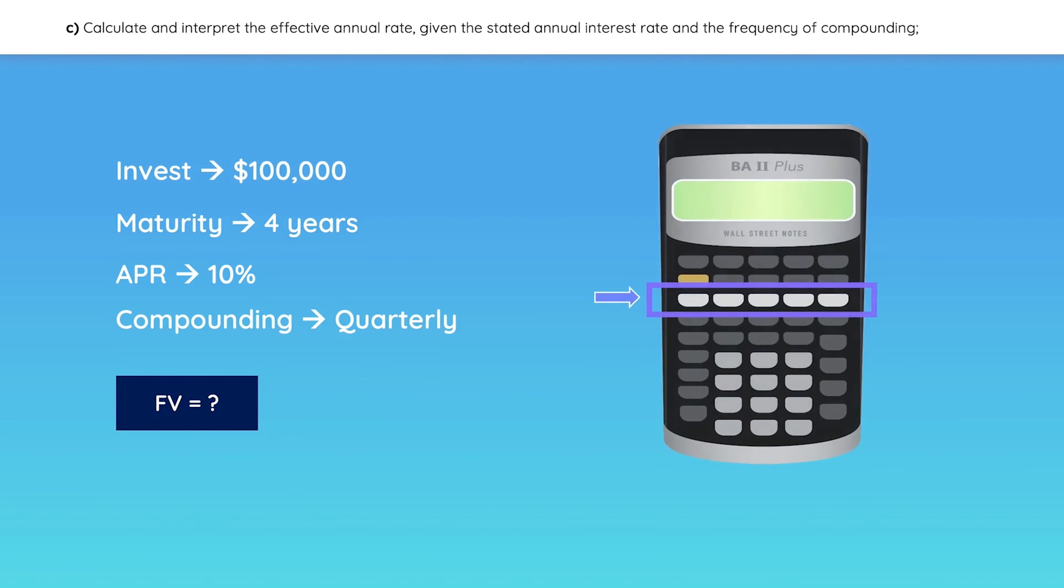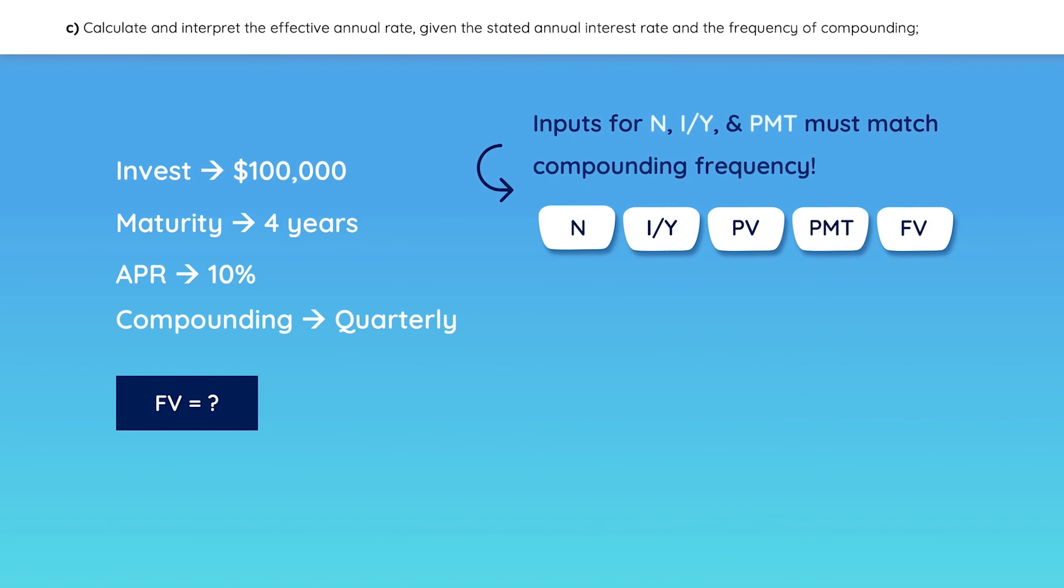You can use these buttons on the calculator to solve time value of money problems. Let's figure this out. One thing you should remember is that all of your inputs must match your compounding frequency. In this case, it's quarterly compounding.